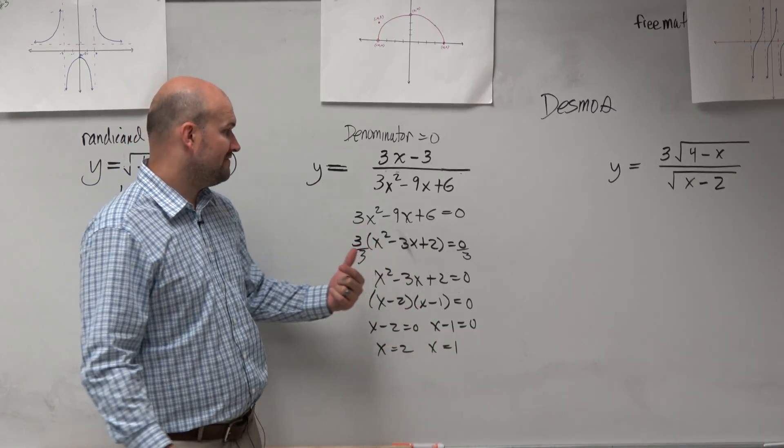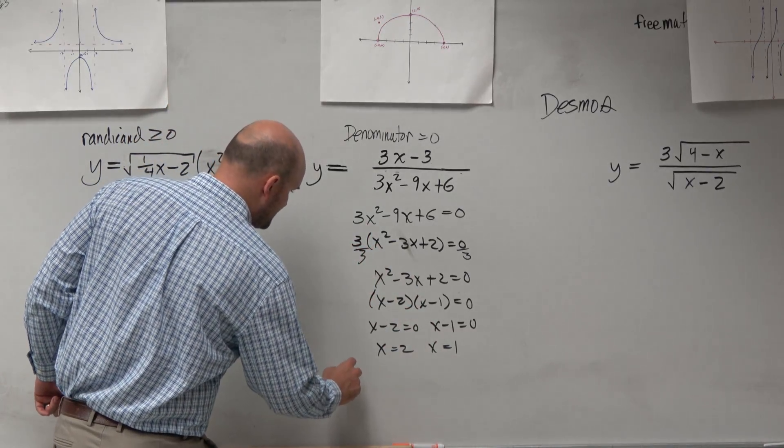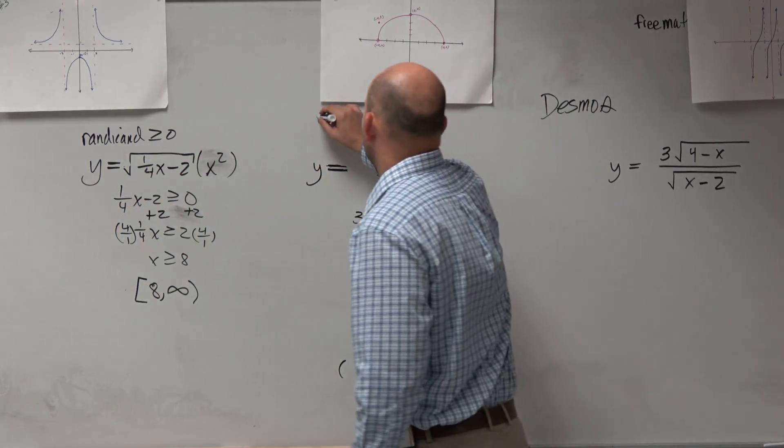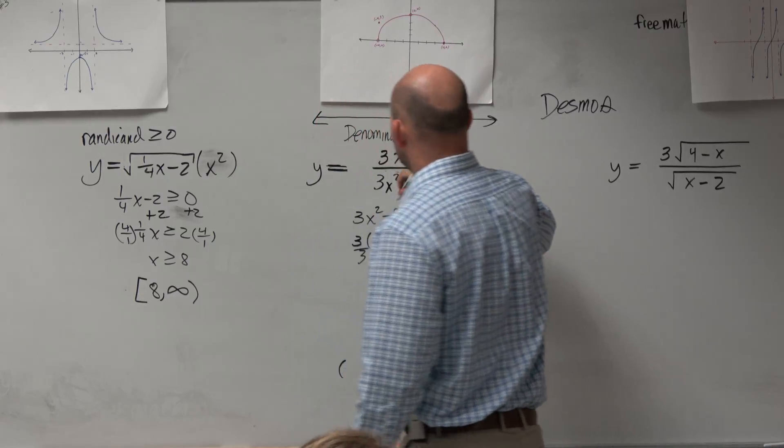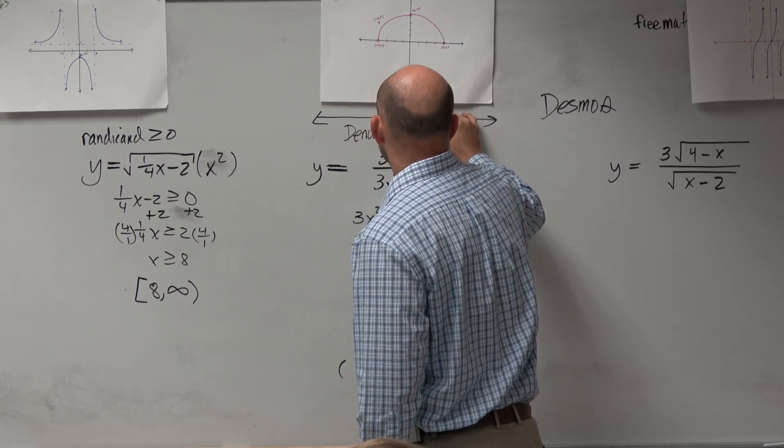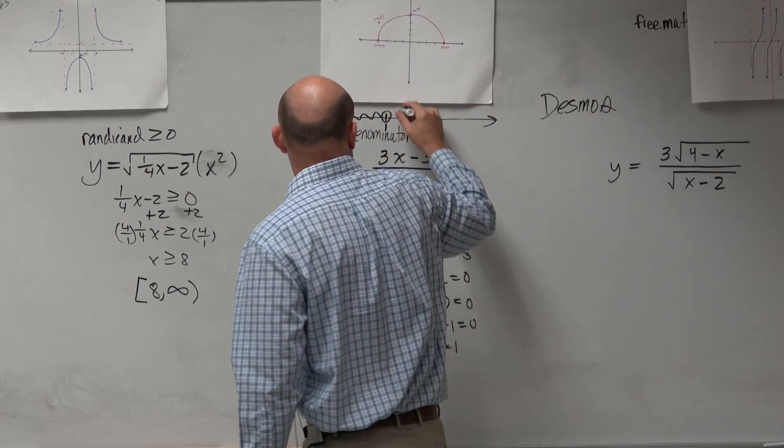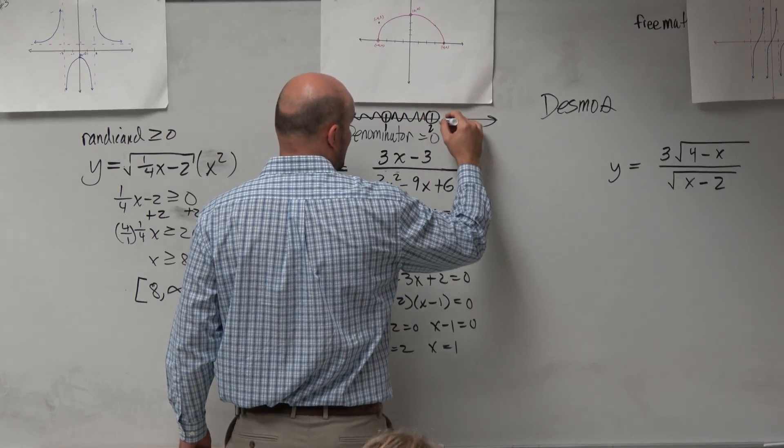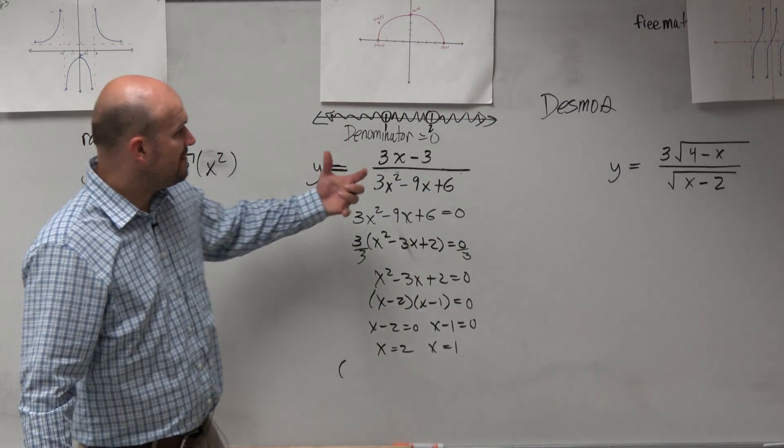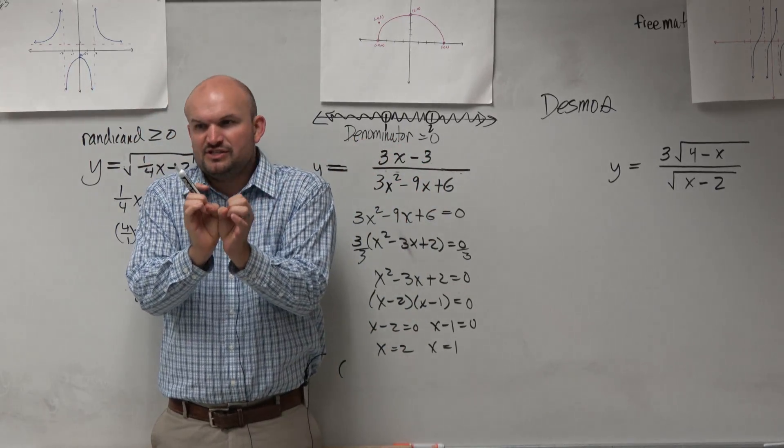Does that make sense? So if I was going to write my domain, I would say my domain is going to be from, so let's actually do a number line for this one. Sometimes the number line will help. So let's do here's 1, and then here's 2. So everything is good from here to here. Everything is good between them, and then everything is good after. So remember, when you have a function that's split up like this, just write the domain of each section.